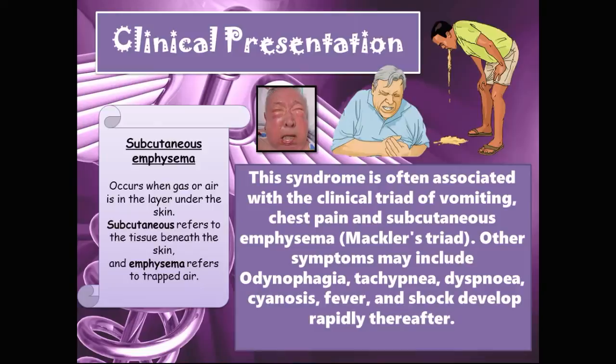This syndrome is often associated with the clinical triad of vomiting, chest pain, and subcutaneous emphysema, and this is called Mackler's triad. Subcutaneous emphysema basically means when gas or air is found in the layer under the skin. Subcutaneous refers to the tissue beneath the skin, and emphysema refers to trapped air.